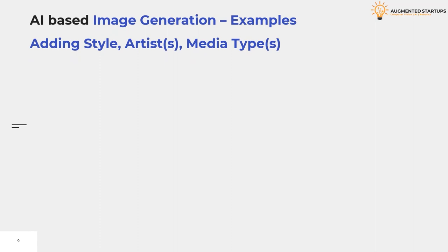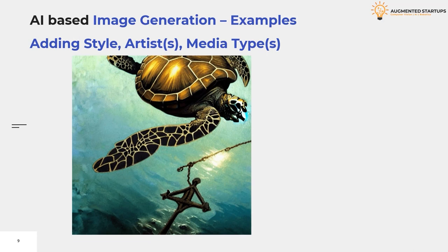There are different approaches to AI-based image generation. We can add styles, artists, and media types. We can fix our turtle's journey by adding artist names and style descriptions, which may aid the theme of the image. For example, the prompt 'a turtle following a metal anchor to the bottom of the sea, fantasy painting by Greg Rutkowski and Alphonse Mucha' includes a general fantasy style, the medium painting, and two artist names. By adding artists and media types, the style is significantly improved.